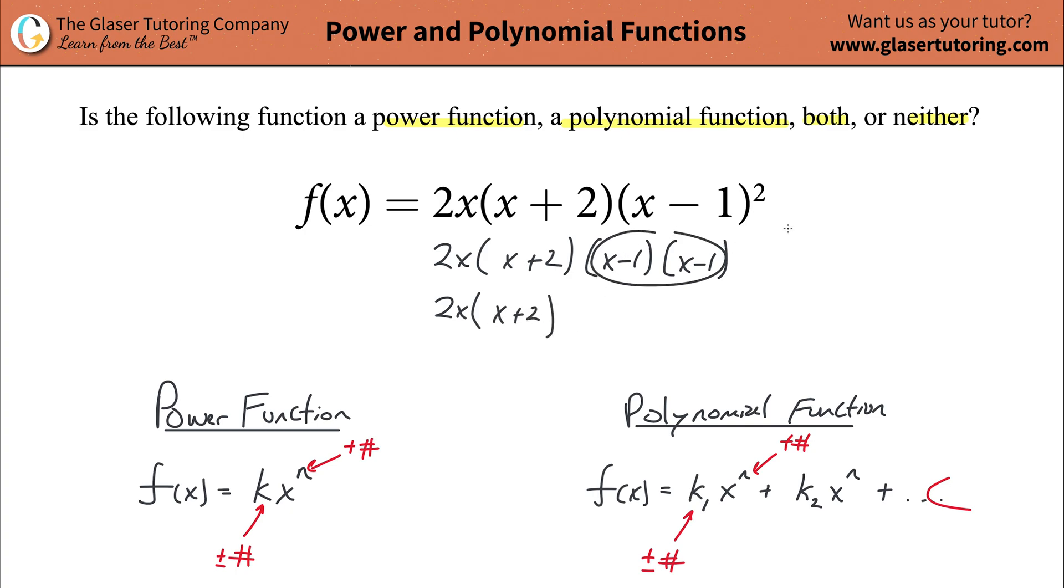When you do this, you have to FOIL it. So x minus 1 times x minus 1. So first you do the first, so it's x times x, so that's x squared. First times the last, so that's negative 1x or just negative x.